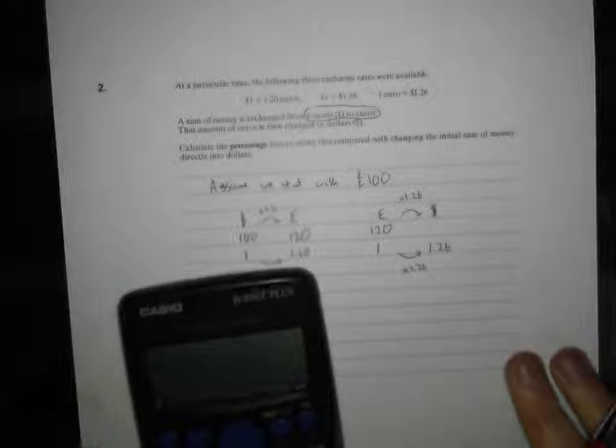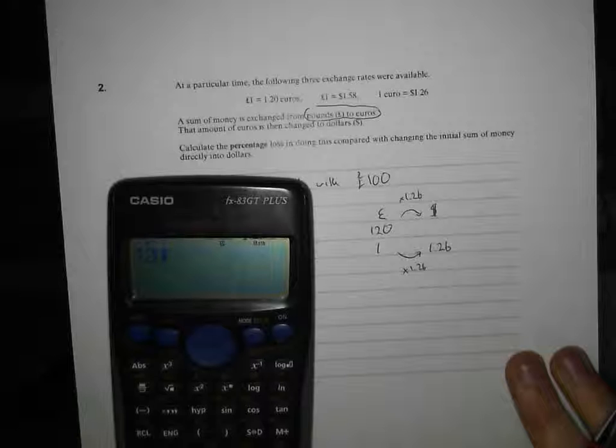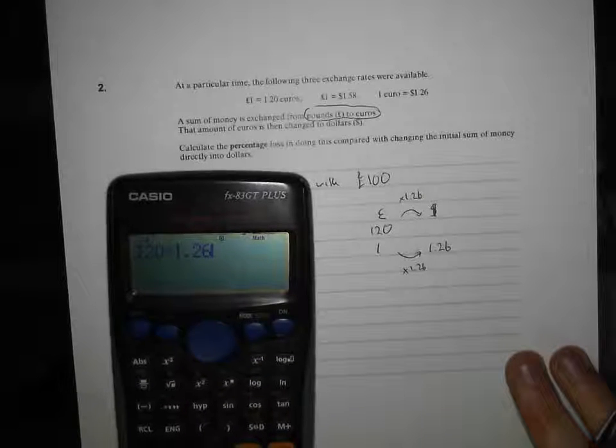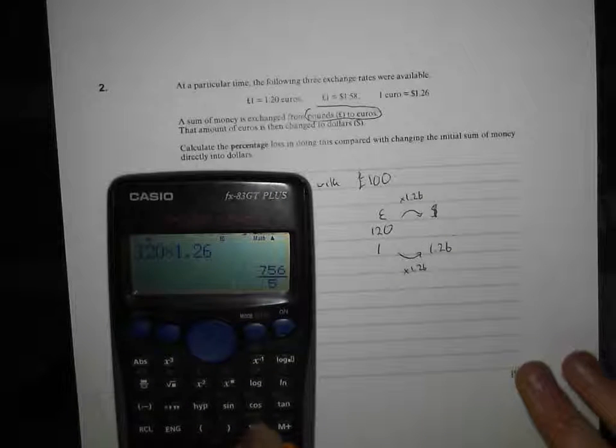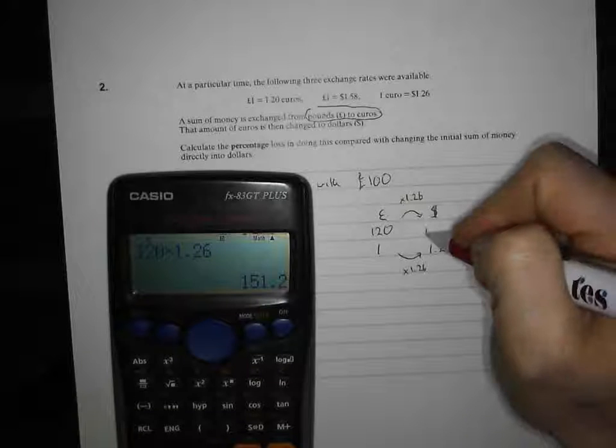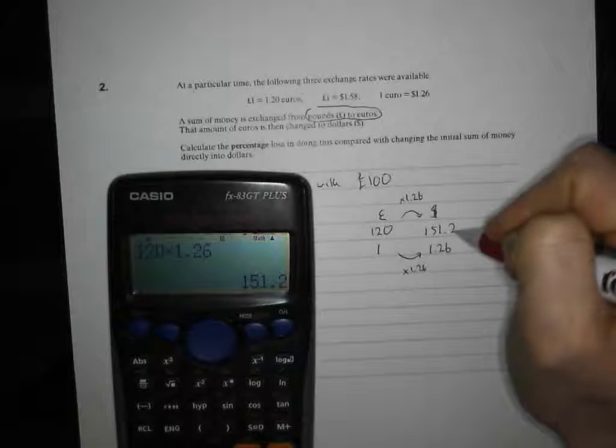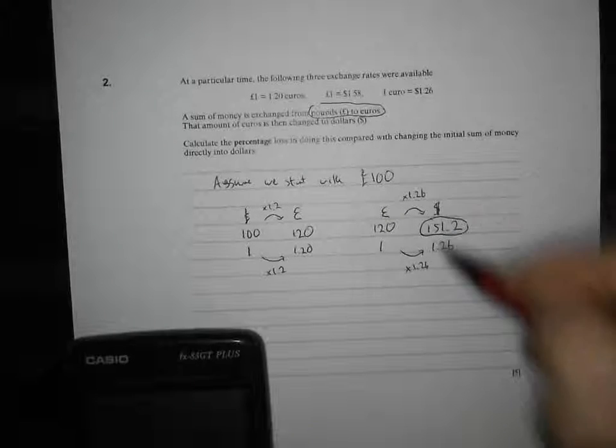You're going to need to reach for the calculator here. 120, times by 1.26, bang that in there, press my little SD button, what's coming out there, 151.2 dollars. So, I reckon if we do it that way, we end up with 151.2 dollars.